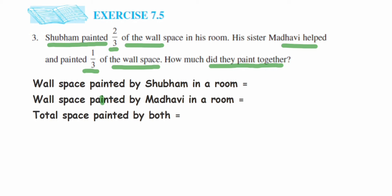So I have already written the statements here. The first one is wall space painted by Shubham in the room is two-thirds, it's given in the question. Similarly for Madhavi it is one upon three. Together means Shubham and Madhavi together means we have to add, so we're going to add two upon three and one upon three.